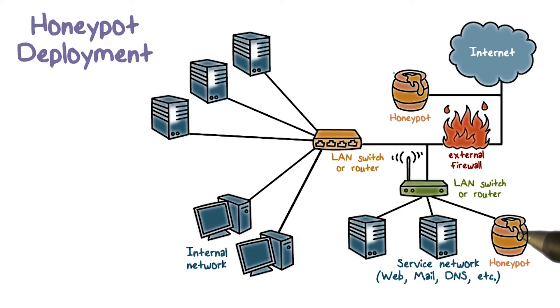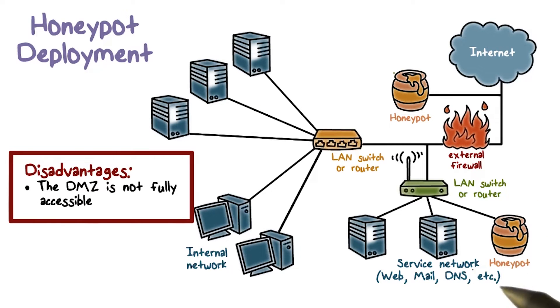A honeypot can also be placed in a DMZ to trap attacks to the public-facing servers. On the other hand, a honeypot at this location may not be able to trap interesting attacks.